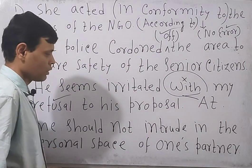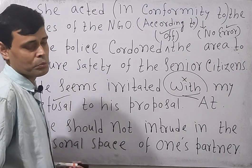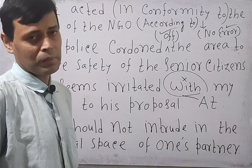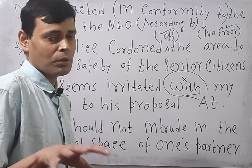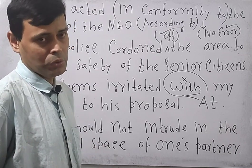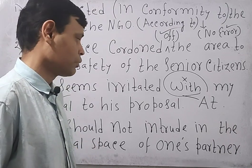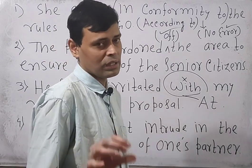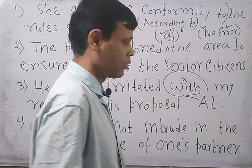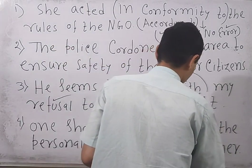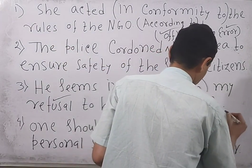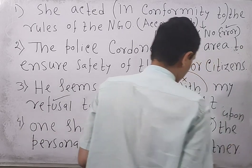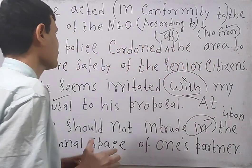Next: 'One should not intrude in the personal space of one's partner.' 'Intrude' means to make an entry without permission. In the case of the word 'intrude,' the fixed preposition should be 'upon,' not 'in' at all. Therefore, the error lies here — it should be 'intrude upon.'